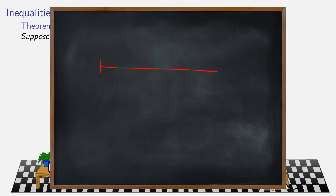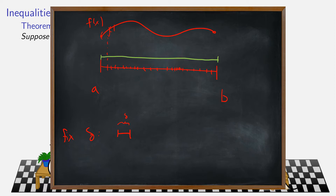We've got our interval from a to b with our function f(x). If you fix a particular delta — say the width of this interval is delta — then you ask what are all possible partitions that never involve a piece this big? All the pieces have to be smaller than that. Then you form a lower sum for this partition. For a different partition, as long as the norm is still less than delta, possibly much smaller, you take the lower sum. Over all such partitions, you look at the lower and upper sums, and that's how you get L of delta and U of delta — by taking the infimum of lower sums and the supremum of upper sums.